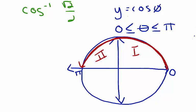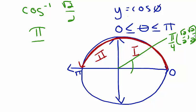There's only one angle theta within this interval that has a cosine of square root 2 over 2, and that angle is pi over 4, because it has coordinate points square root 2 over 2 and square root 2 over 2. Therefore, we know that cosine inverse of square root 2 over 2 is the angle pi over 4.